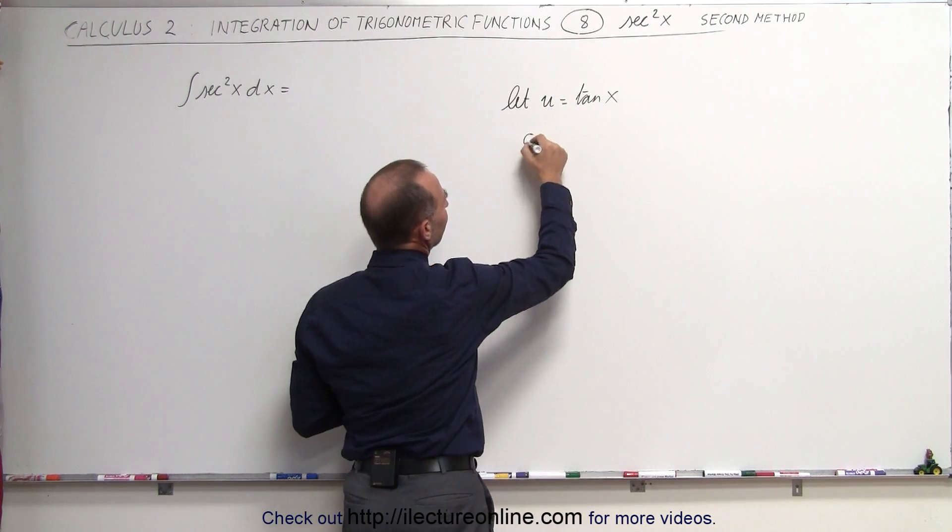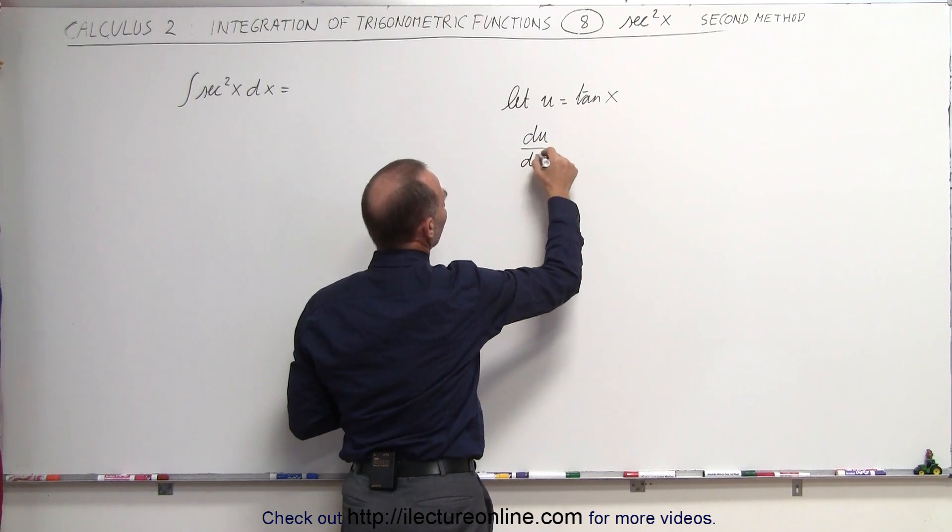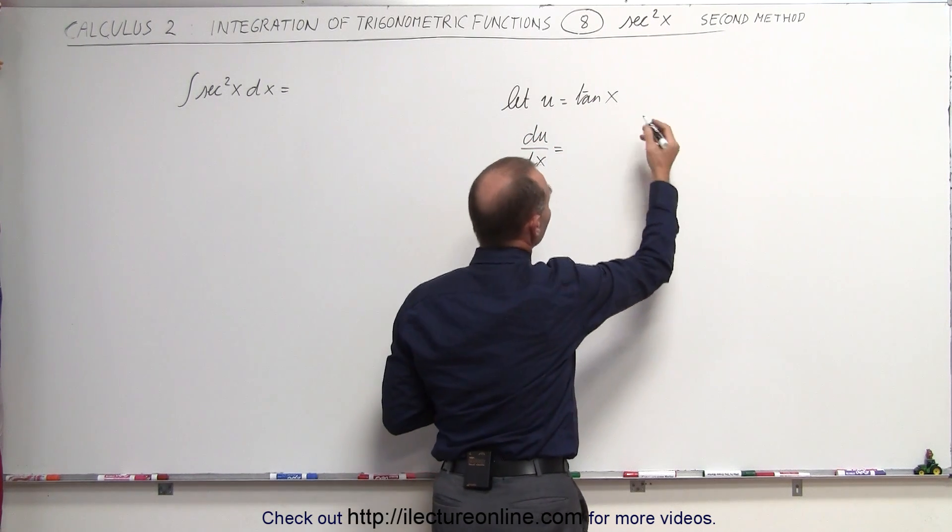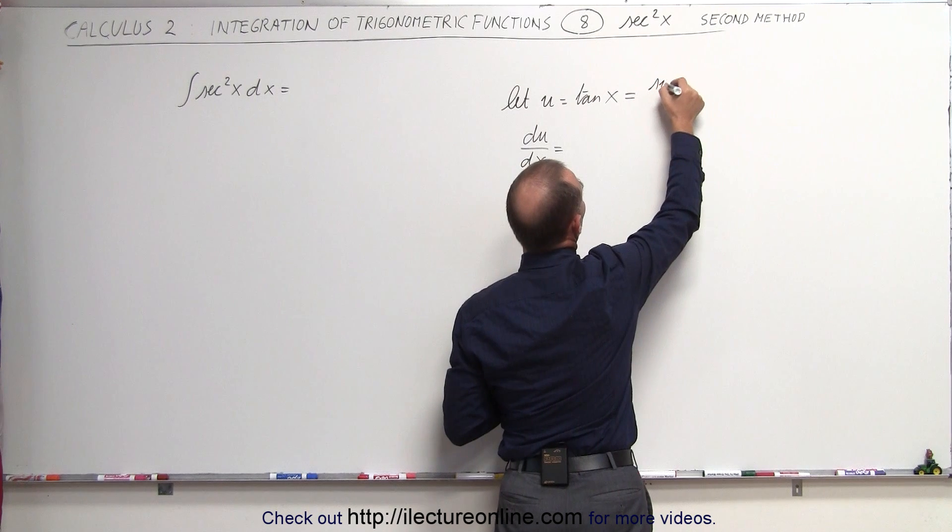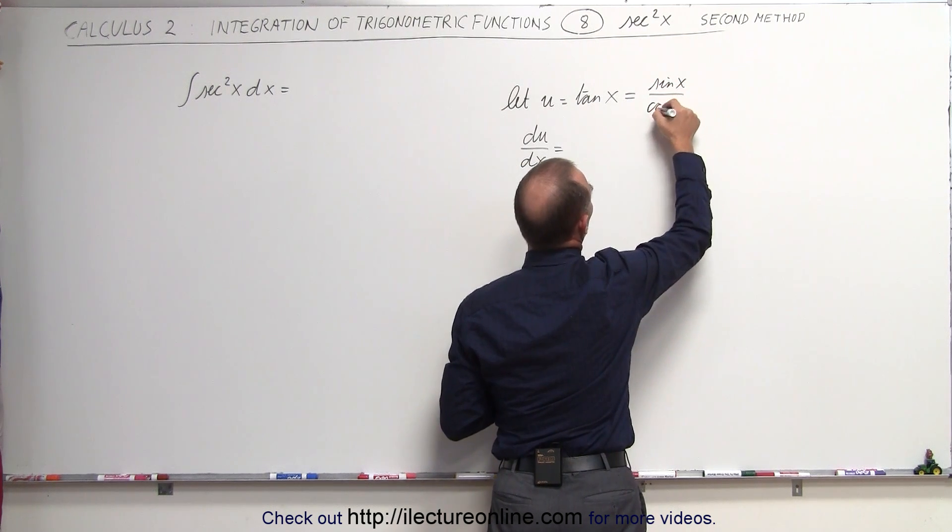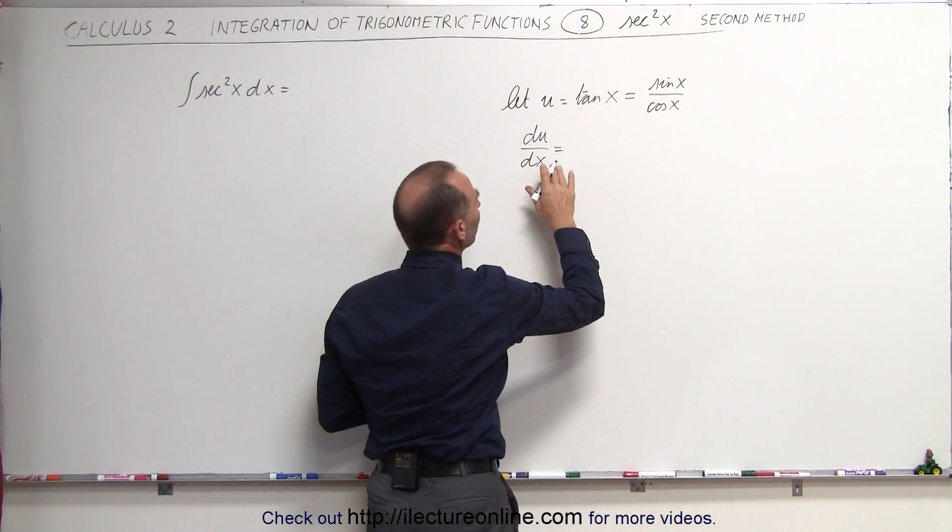If we do that, then du dx, the derivative of that with respect to x, is equal to, well, the tangent of x, of course, is the sine of x divided by the cosine of x. So here, when we take the derivative...